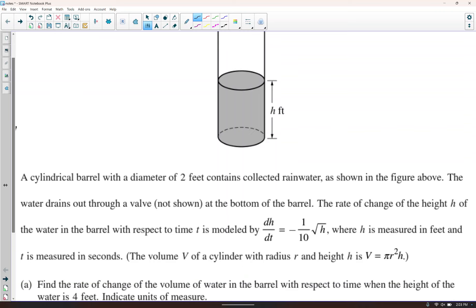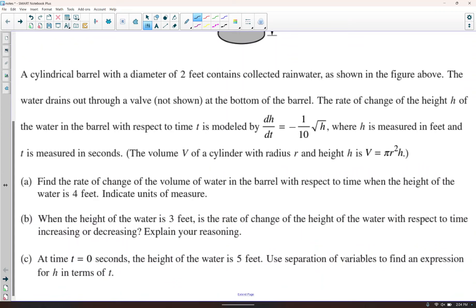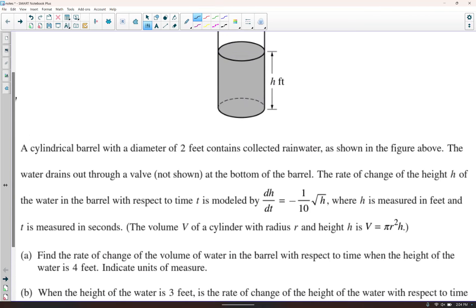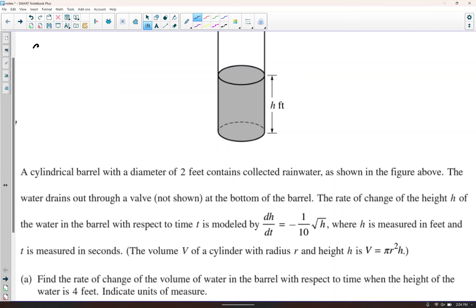So let's look at part A. Find the rate of change of the volume of the water in the barrel with respect to time when the height of the water is 4 feet. So dV/dt is the question. When the height of the water is 4 feet, indicate units of measurement.